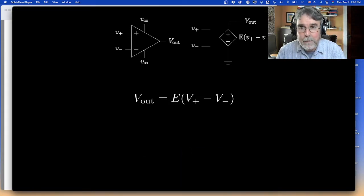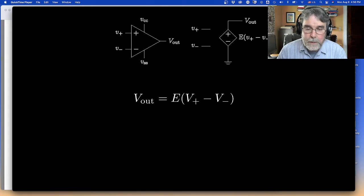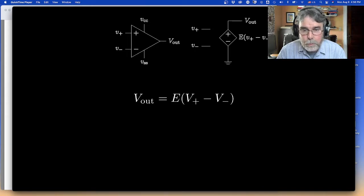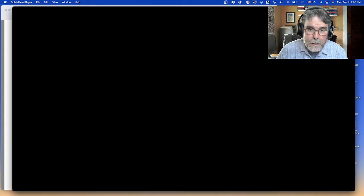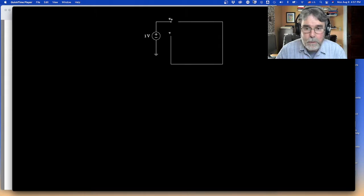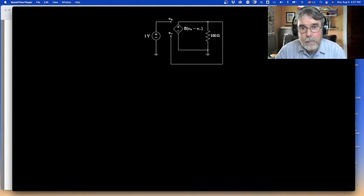In an op amp, like the ones we were using in class, I think we were using 358s, their so-called open loop or nominal gain out of the box at DC frequencies, right around zero, is hundreds of thousands. So it's very, very large. And so what I want to do is talk about how do we model that? How do we model an op amp?